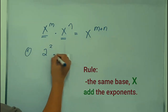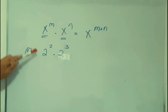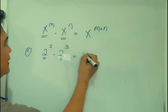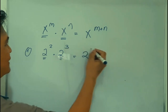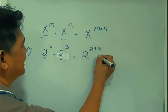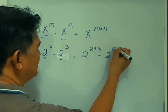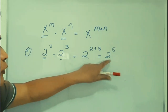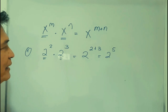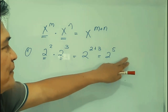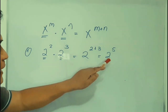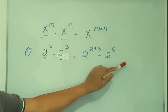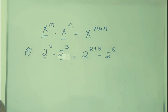Example: 2 squared times 2 raised to the third power. They have the common base 2, so you add the exponents: 2 plus 3, giving you 2 raised to the fifth power. In arithmetic, that is not yet your final answer — you multiply 2 five times: 2 times 2 is 4, times 2 is 8, times 2 is 16, times 2 is 32.